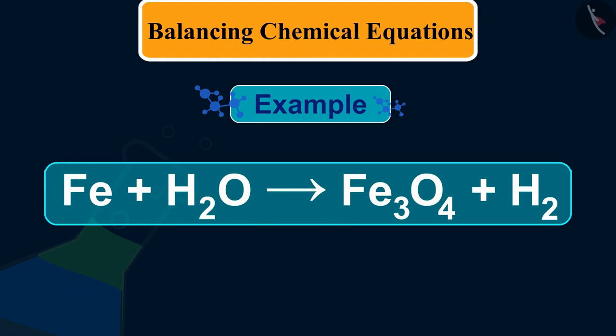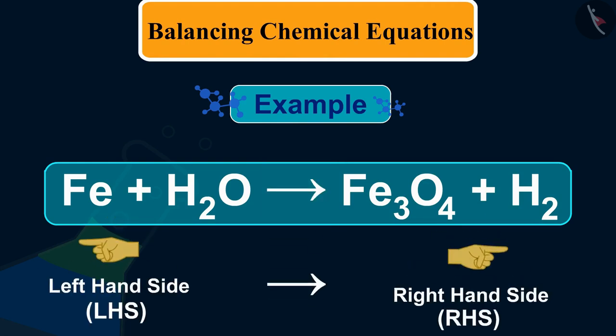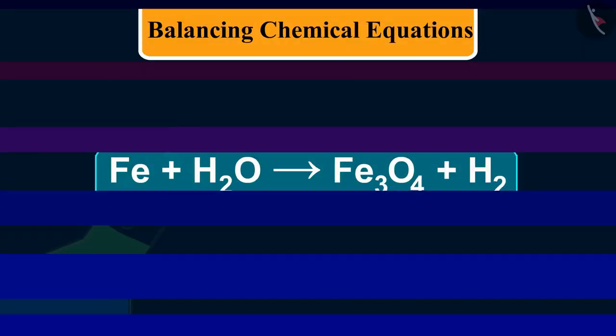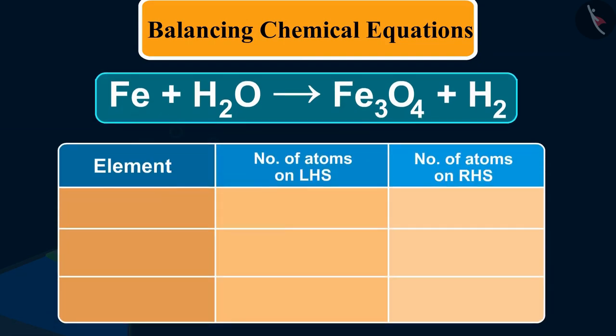Let us now try to understand balancing with the help of an example. Take the reaction of iron with water which produces iron oxide and hydrogen. Let us examine the number of atoms of different elements on both sides of the arrow.